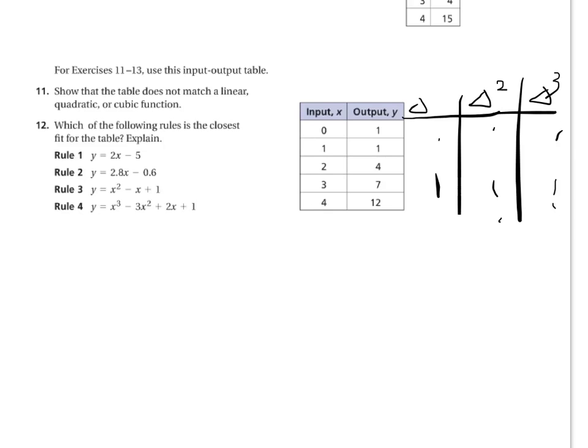Problem 12: which of the following rules is the closest fit for the table? Explain. I recommend plugging in some numbers. For example, rule 1 is y equals 2x minus 5.